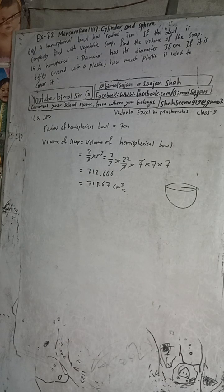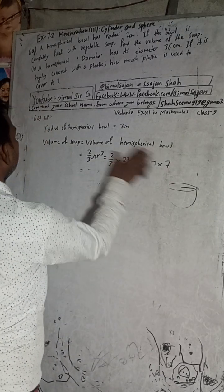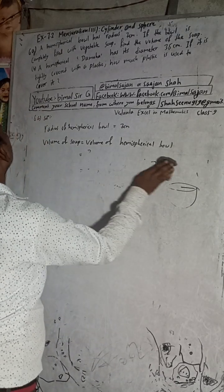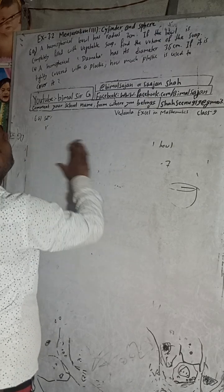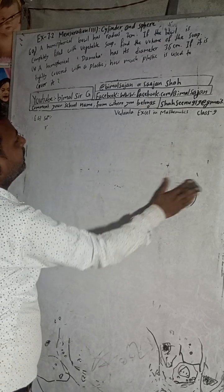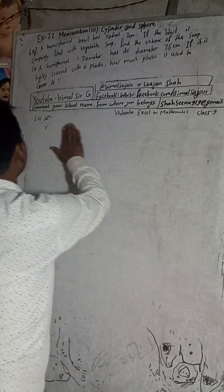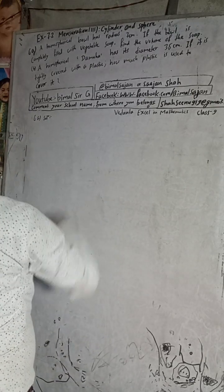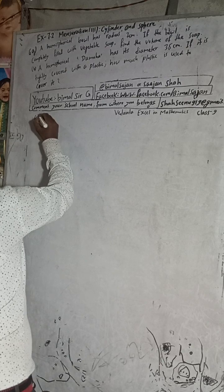Hi class 9 and 10 students, welcome back to Vimal Sarji YouTube channel. Now I am going to solve question number 6b, exercise 7.2, mensuration third part — cylinder and sphere, Vedant Excel in Mathematics class 9. This is question 6b.